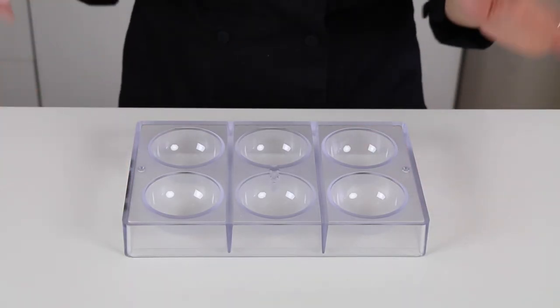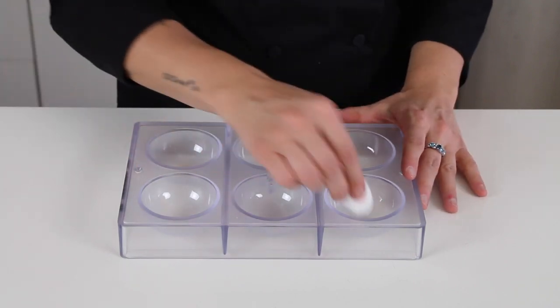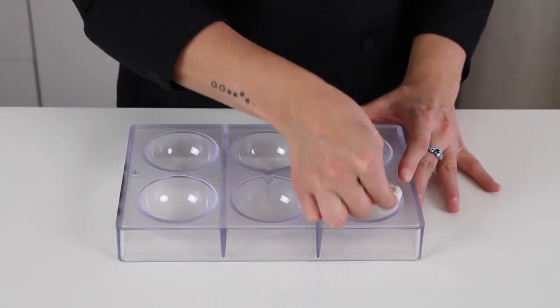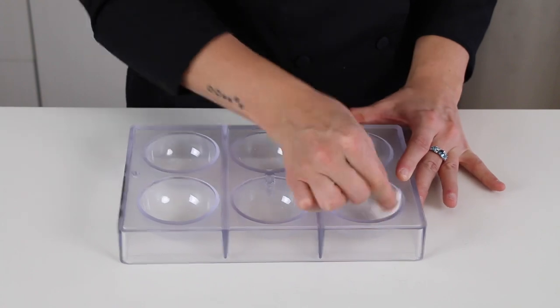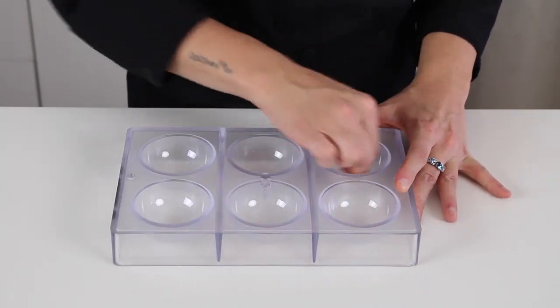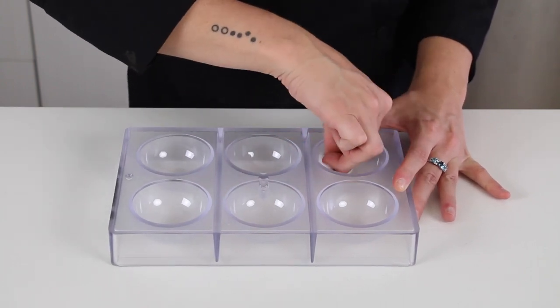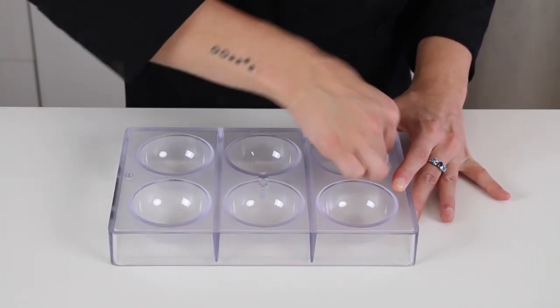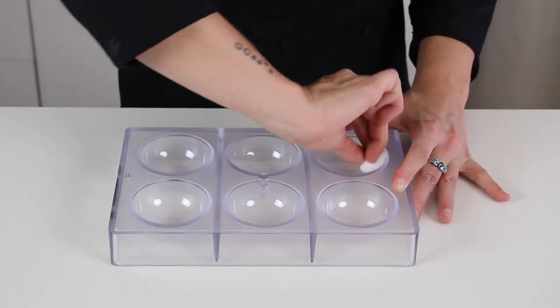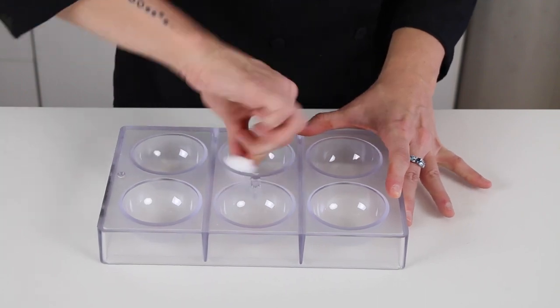So to prepare your hot cocoa bomb polycarbonate mold, I'm just going to take a cotton ball and buff it. This will make sure it's shiny and there's nothing along the surface. Of course, it should be clean. To clean this, you can just use hot water with mild soap. So I just go in each cavity.